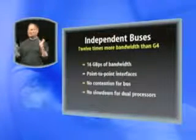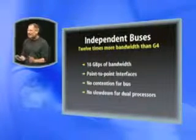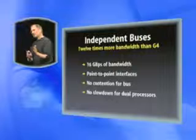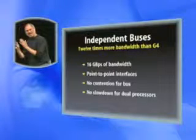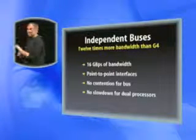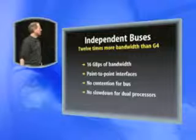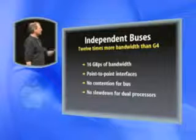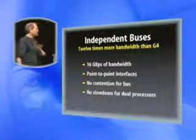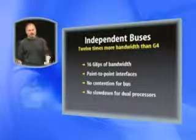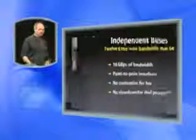And we can add a second processor. When you add two processors, this is where these independent buses really come into play, because one processor does not slow down the other one at all — they're completely independent. We have 12 times the bandwidth of the G4 here, and there's no contention for the bus, no slowdown when you add a second processor.